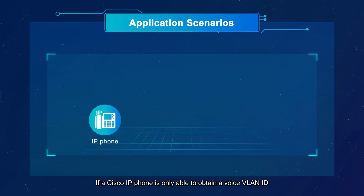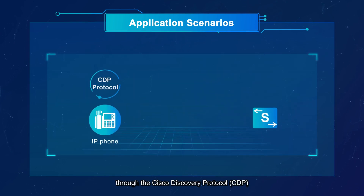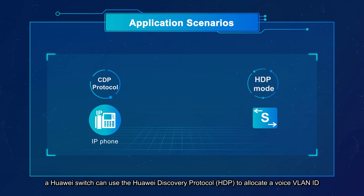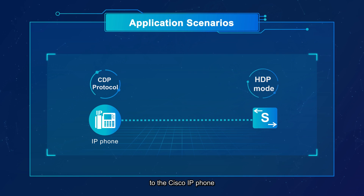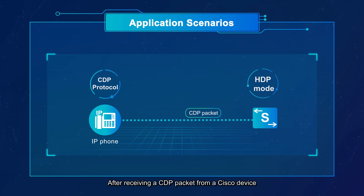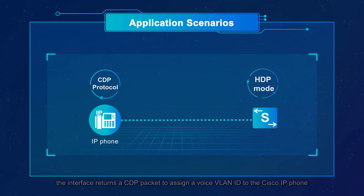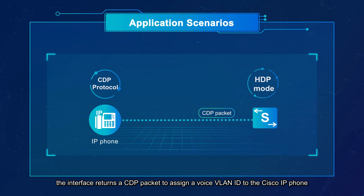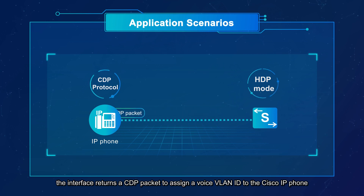If a Cisco IP phone is only able to obtain a voice VLAN ID through the Cisco Discovery Protocol, a Huawei switch can use the Huawei Discovery Protocol to allocate a voice VLAN ID to the Cisco IP phone. In HDP mode, the voice VLAN legacy function is configured on an interface. After receiving a CDP packet from a Cisco device, the interface returns a CDP packet to assign a voice VLAN ID to the Cisco IP phone.